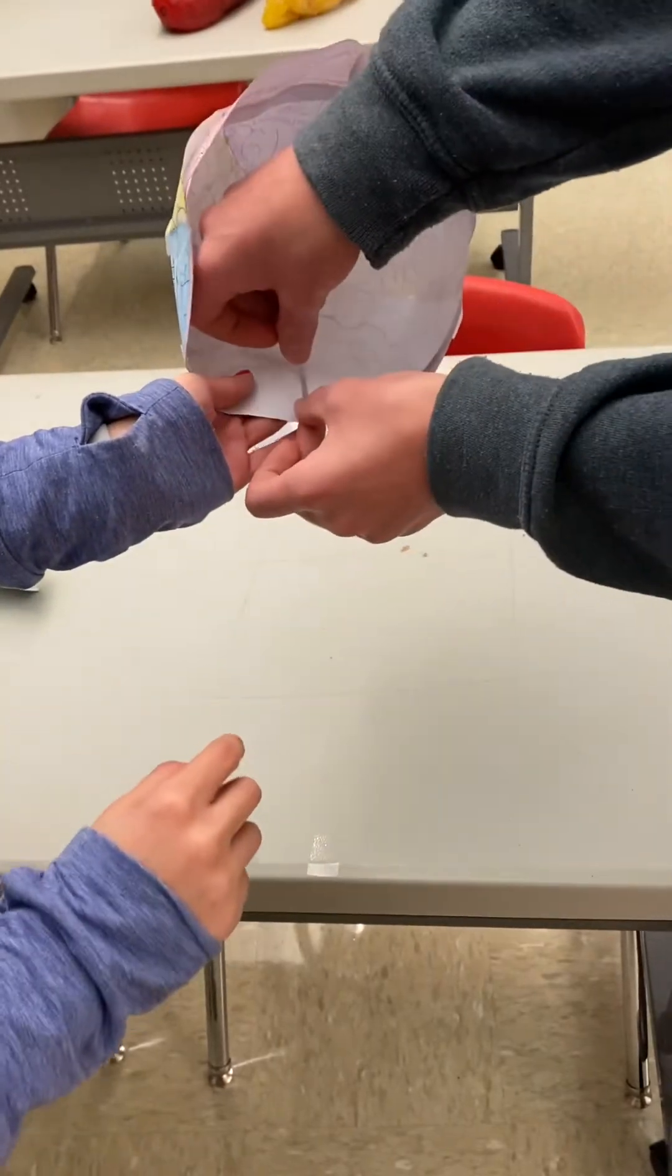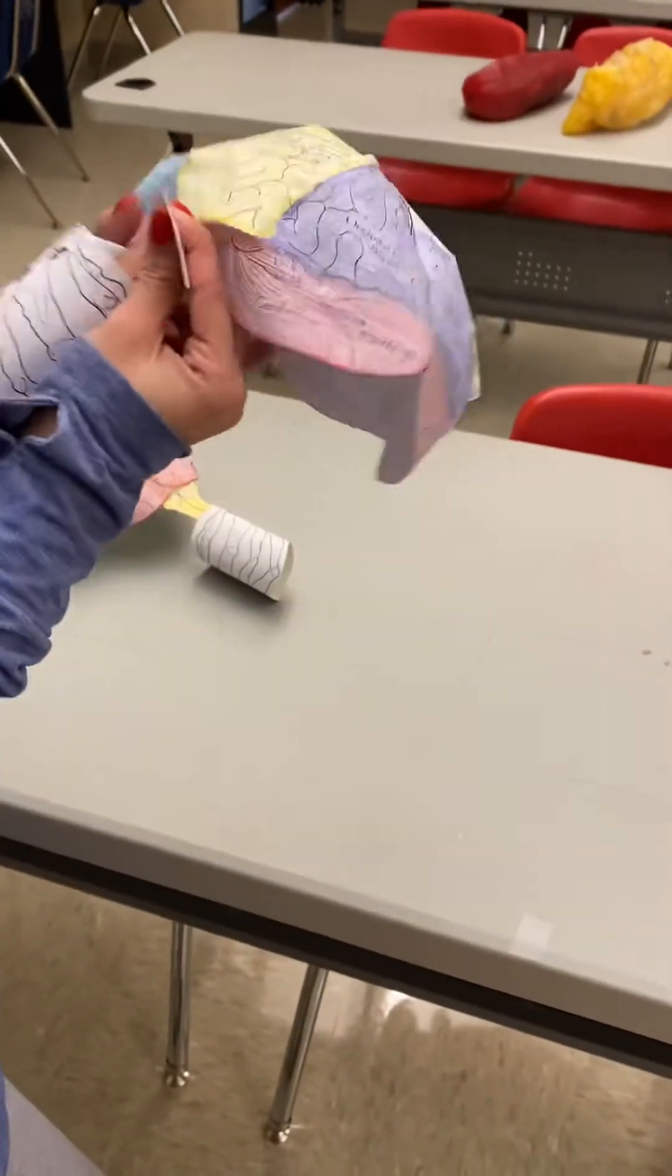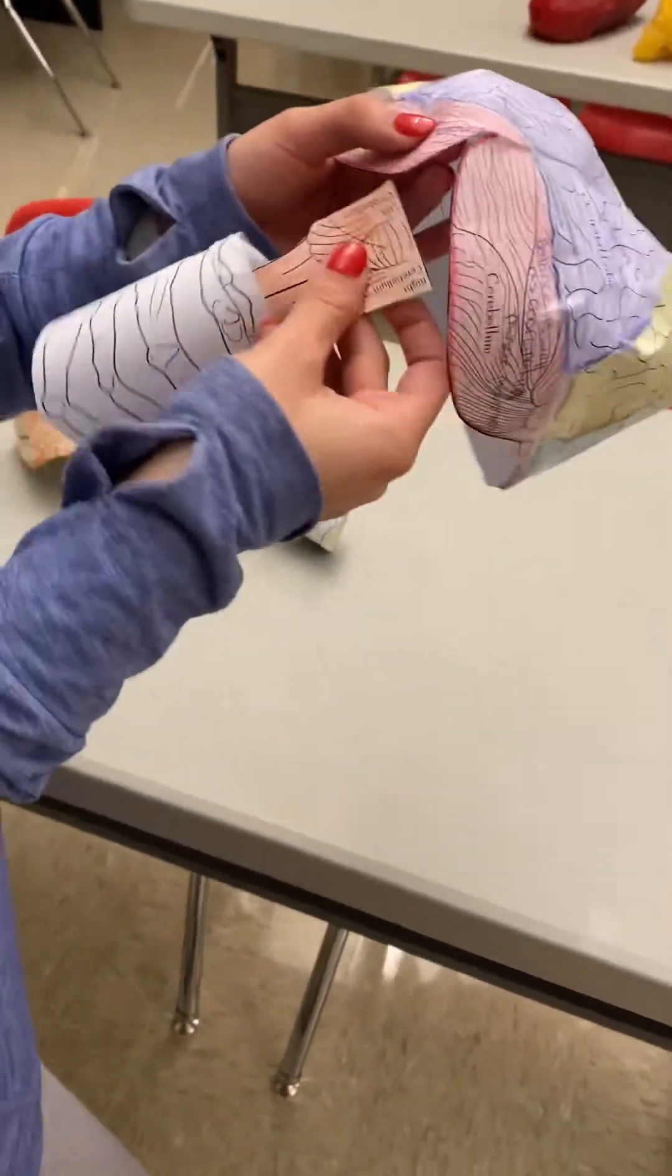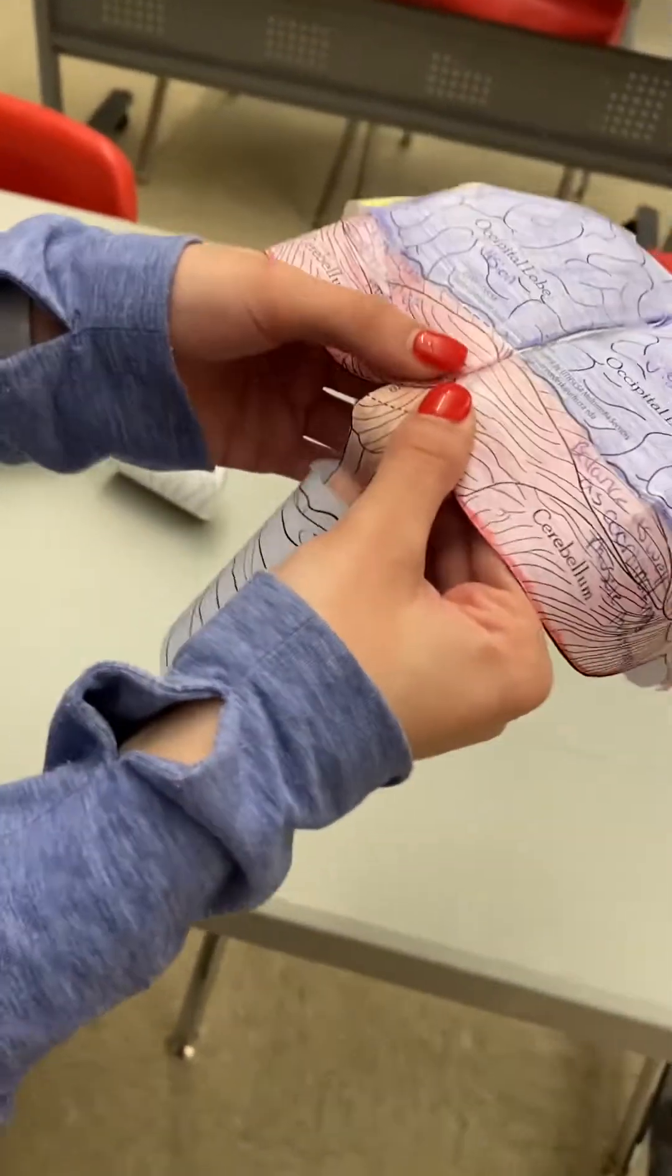And then just do one there and then we're fine. And then lastly, for your brain stem, your brain stem is going to go on the back of the cerebellum. Make sure they match up because these two exactly look like this. So you're going to put it on the bottom. Yours might not look the best, but it's going to be fine. And then make sure this gets taped underneath, so then tape it underneath.